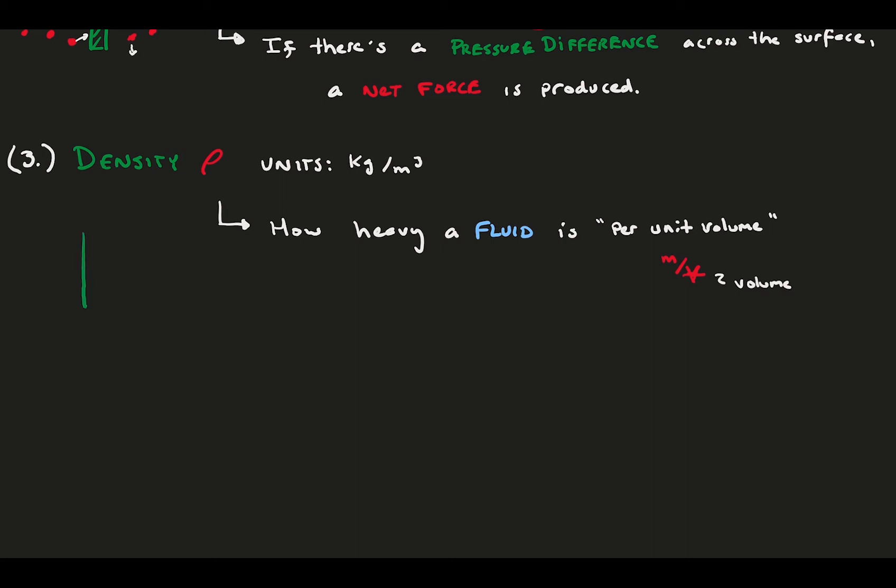Density often represents mass in our conservation equations because it's more convenient to think of fluids from a per-unit volume perspective.